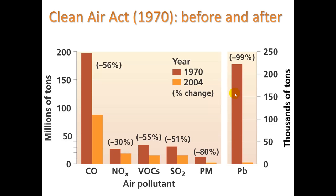The Clean Air Act was passed in 1970. Looking at the before and after for all these criteria pollutants: carbon monoxide went way down from 1970 to 2004, nitrogen oxides went down, VOCs went down, sulfur dioxide, particulate matter, and lead went way, way down. There is reason to be hopeful that with legislation we can solve a lot of our environmental problems, or at least severely reduce them.